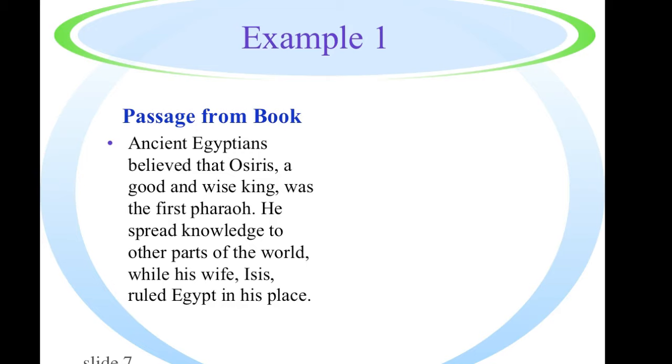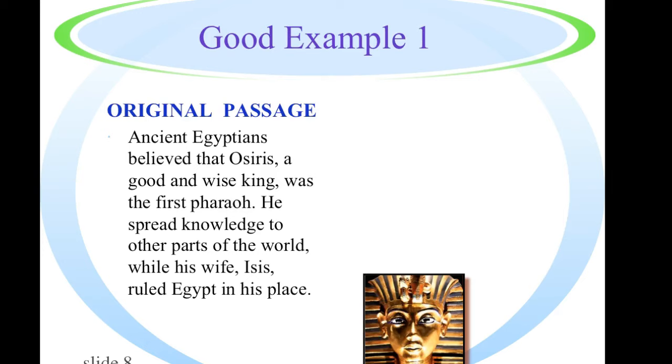So let's take a look at some examples. We have a typical passage here that might occur in a history book, and in this one we have the statement that ancient Egyptians believed that Osiris, a good and wise king, was the first pharaoh. He spread knowledge to the other parts of the world while his wife, Isis, ruled Egypt in his place. Now, if we're going to paraphrase, one of the tools that we might want to employ is one that we just finished working on, and that's highlighting. So if we look at this original passage, what words would you say are key and should be highlighted?